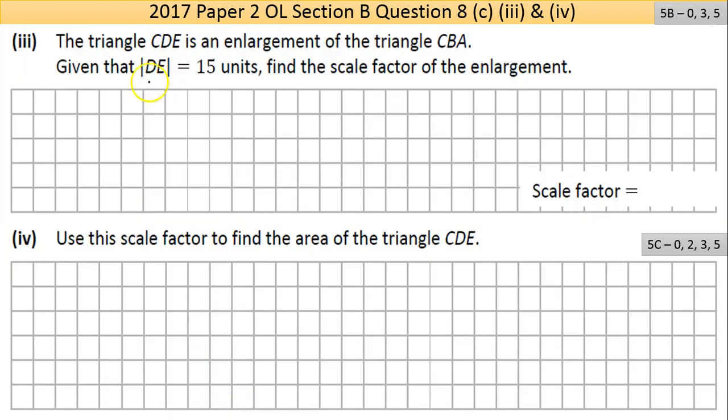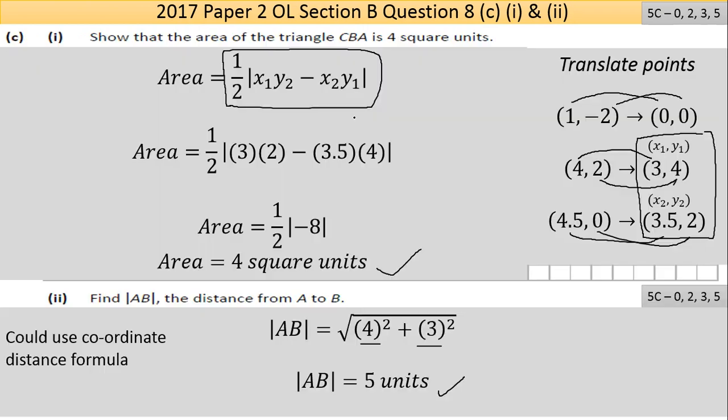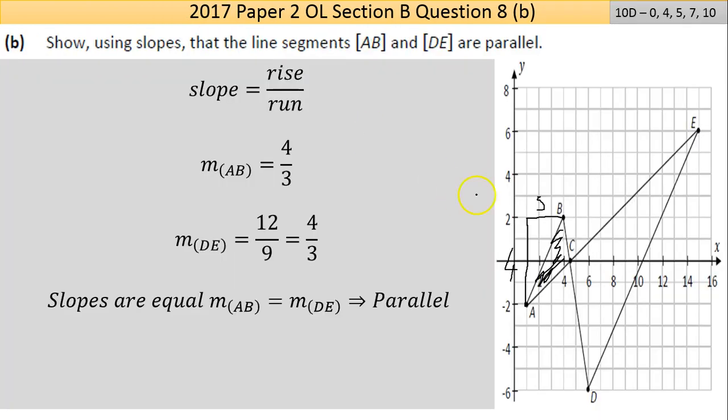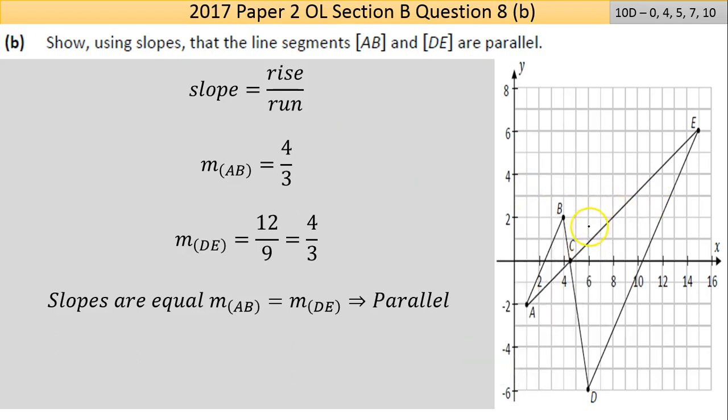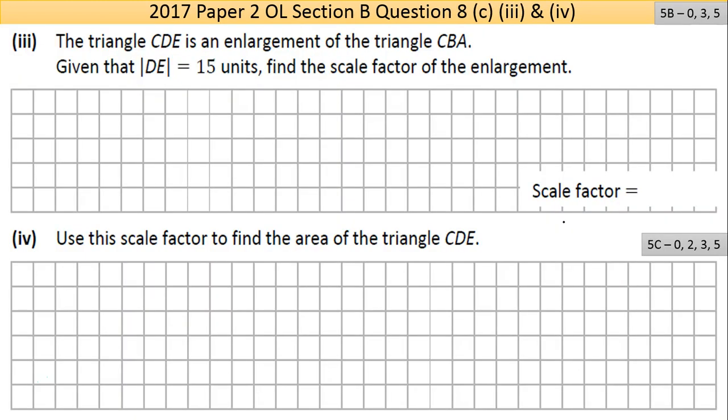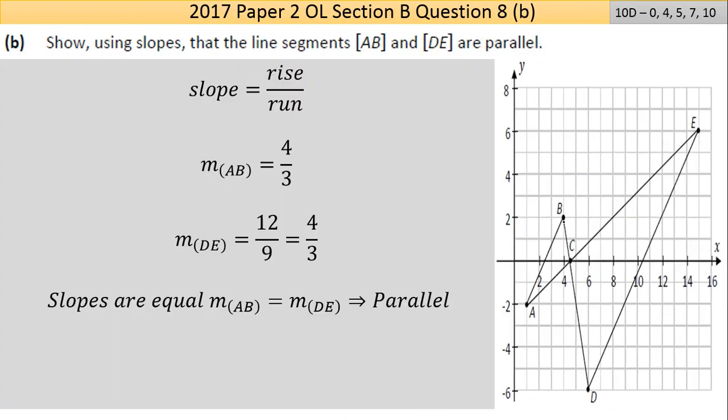We have part 3 here. We have the triangle CDE is an enlargement of the triangle CBA. Given that the length of DE is 15 units, find the scale factor of the enlargement. So I'll just go back to my diagram here. It's probably a bit messy, so I'm going to erase all the ink here. So we're trying to see the scale of enlargement.